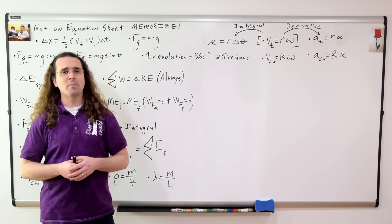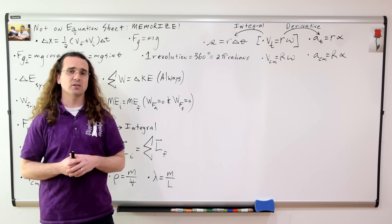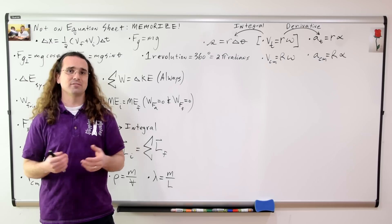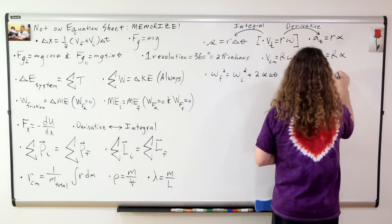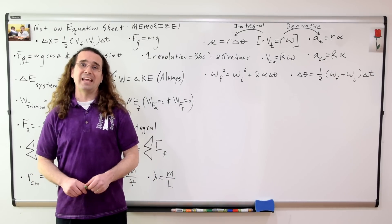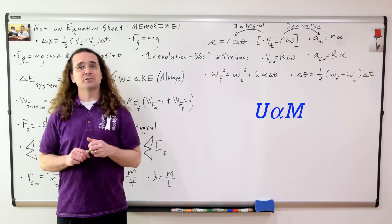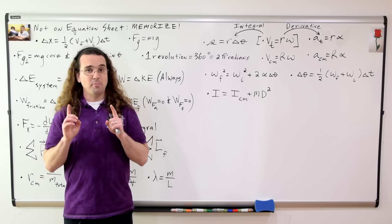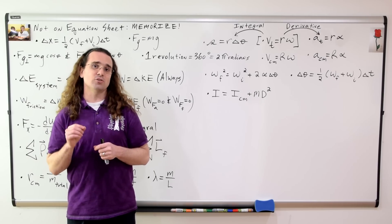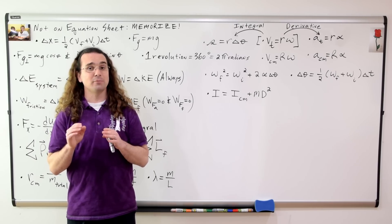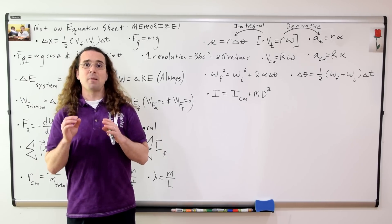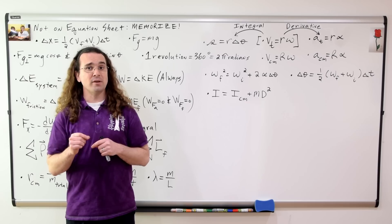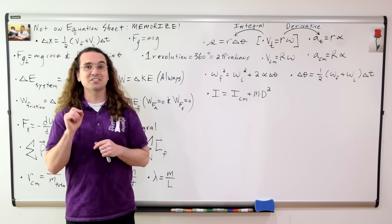You probably remember that one revolution equals 360 degrees which equals two pi radians, but it is worth noting that you do have to remember that. There are two uniformly angularly accelerated motion equations which are not on the equation sheet. The parallel axis theorem is the way you determine the moment of inertia of an object with uniform density about a location which is not its center of mass, when you already know the moment of inertia of that object about its center of mass.